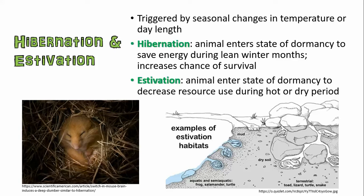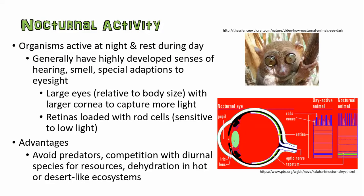There are environmental cues for this, like the length of the day. Organisms can be divided into multiple categories depending on when they're active and when they rest. You're most familiar probably with nocturnal and diurnal organisms. Nocturnal organisms are active at night. If you are nocturnal, you're going to have a set of adaptations that allow you to operate best in the darkness — usually highly developed senses of hearing or smell, and if they rely on eyesight, special adaptations to their eyes.